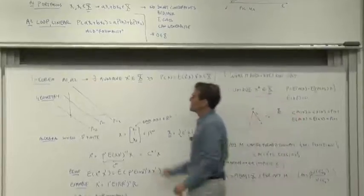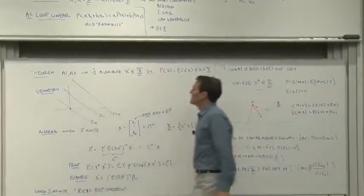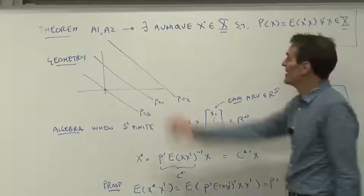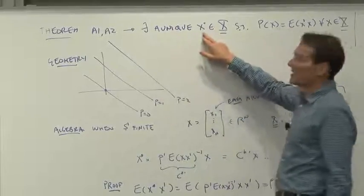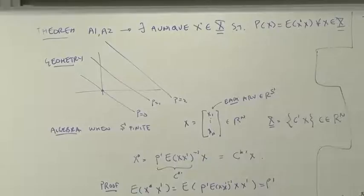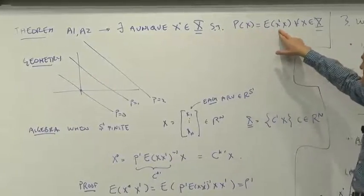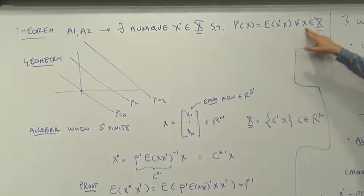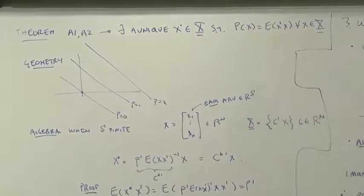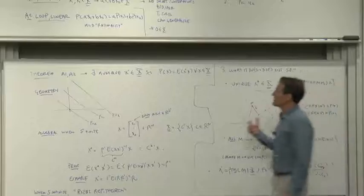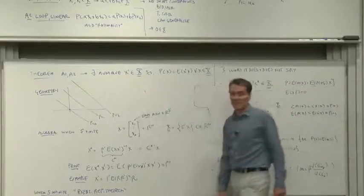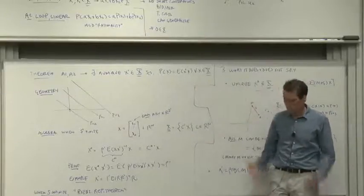The theorem is that if those assumptions hold, then read slowly: there is a unique discount factor x* in the payoff space such that the price of any payoff is expected discounted by x* payoff for any payoff x in that payoff space. That's a theorem about the existence of a discount factor.